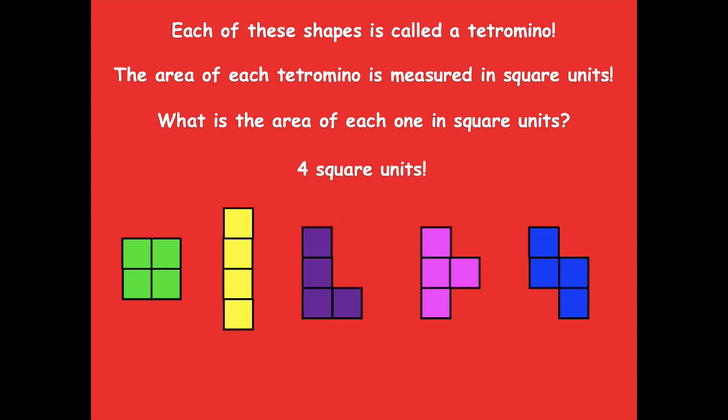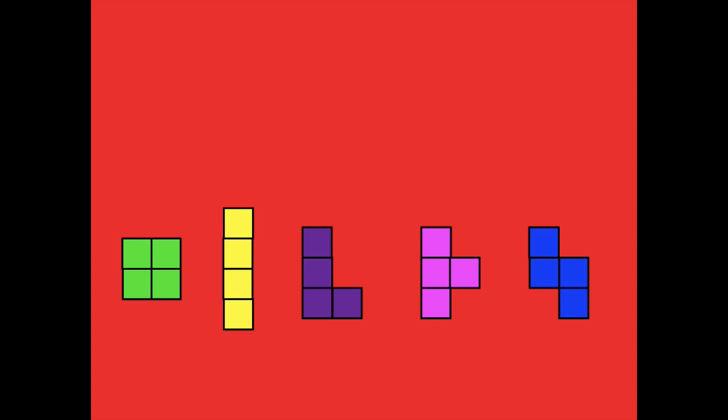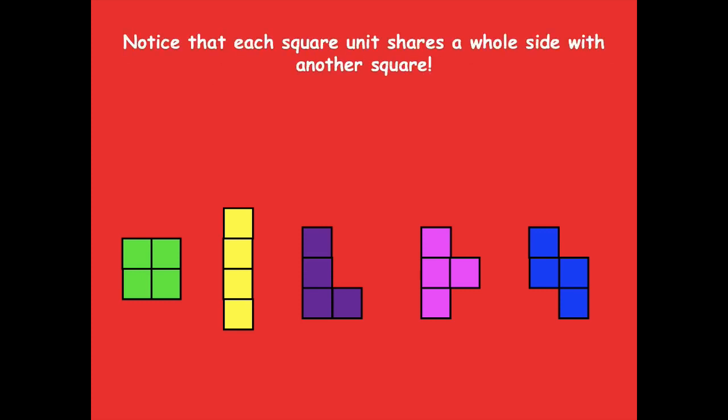They're all four square units — all of them! They just look different, but they each have four square units. Notice that each square unit shares a whole side with another square. Like these two share these sides, and over here these two share these two sides. That's true throughout all of those tetrominoes.